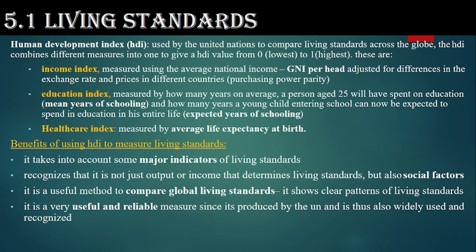The HDI is categorized into components. First, the income index, measured using average national income — GNI per head — adjusted for differences in exchange rates and prices in different countries, known as purchasing power parity. Second, the education index, measured by the mean years of schooling for people aged 25 and the expected years of schooling for a young child entering school.